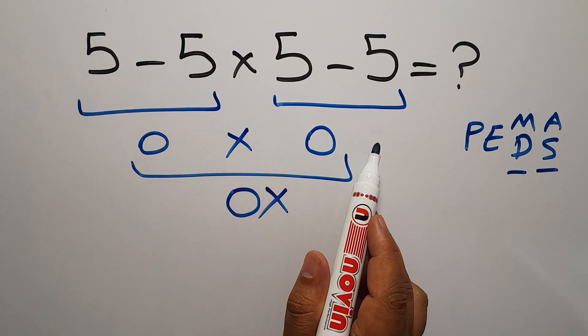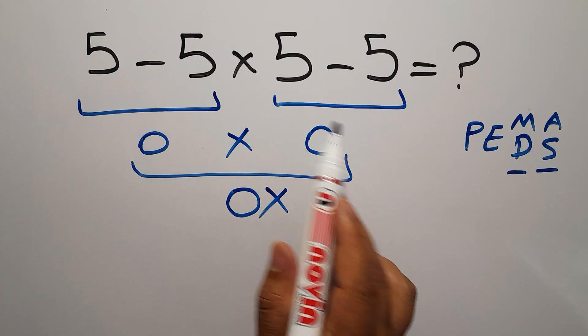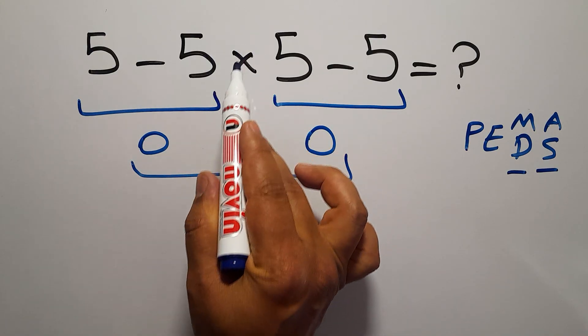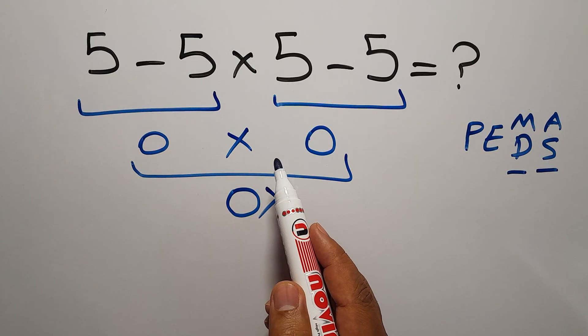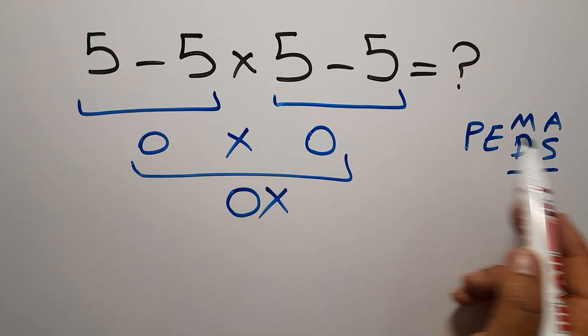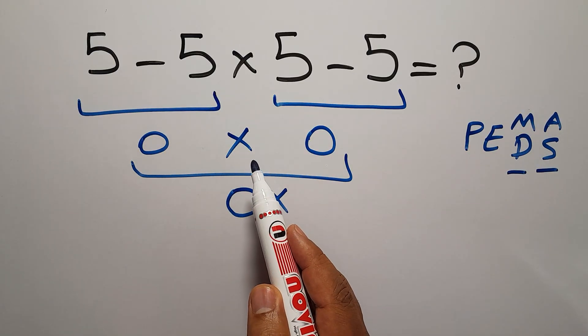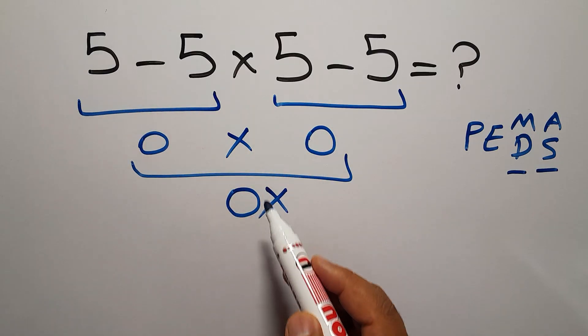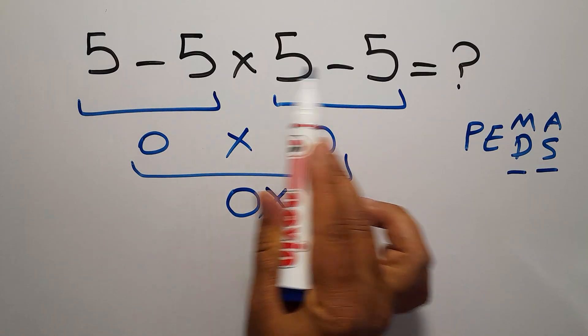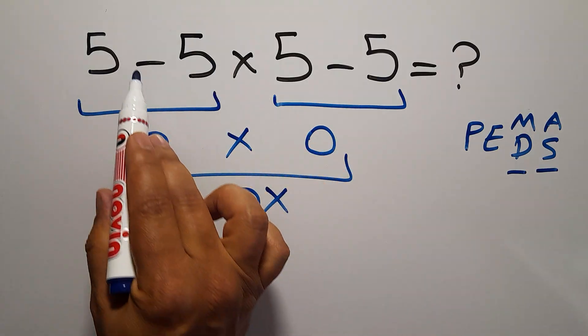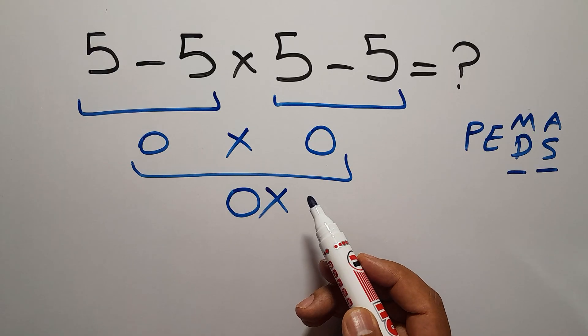So here, first we have to do this multiplication because in PEMDOS, multiplication comes before subtraction. In this expression, we have one multiplication and two subtractions.